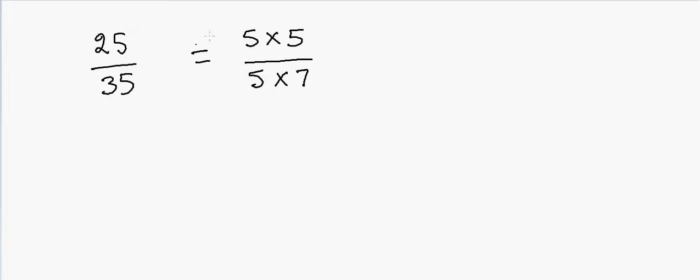Now I can't factor it anymore. So now if you look at the fives, the fives are common, so I can cancel the fives and I'm left with 5 divided by 7. So this is my simplified fraction.